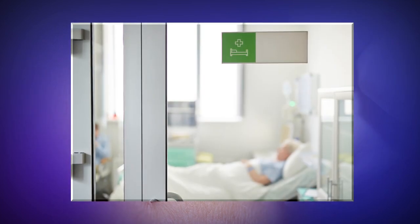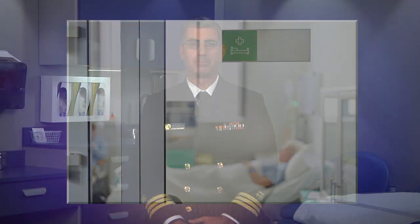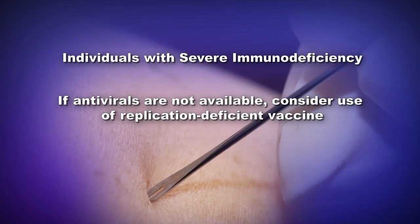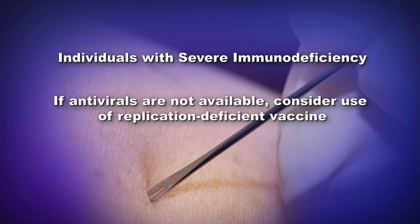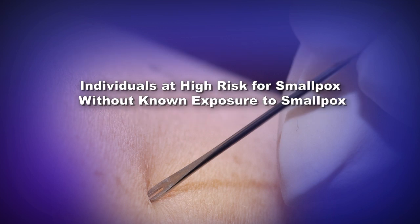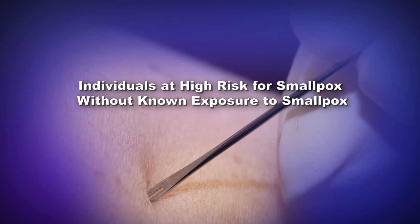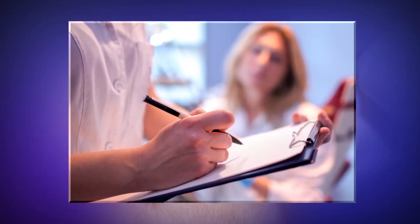If symptoms of smallpox do occur, then the individual should be isolated immediately. Although individuals with severe immunodeficiency may not benefit from vaccination, if antivirals are not immediately available, it is reasonable to consider the use of a replication-deficient vaccine such as Imvamune, if the vaccine is available and authorized for use by the Food and Drug Administration. Depending on the magnitude of the outbreak and the effectiveness of the public health response, individuals at high risk for developing smallpox infection without known smallpox exposure will be defined by public health authorities during the smallpox emergency, and should be screened for relative contraindications prior to ACAM2000 vaccination.